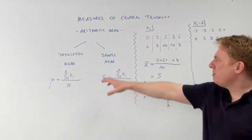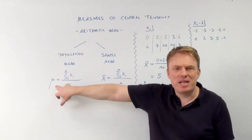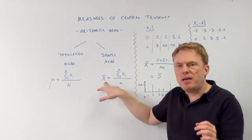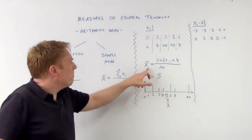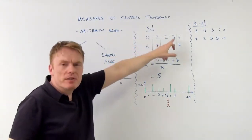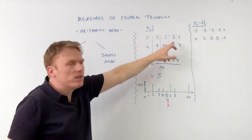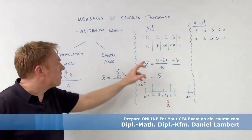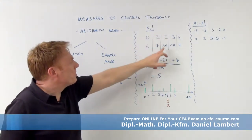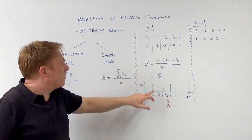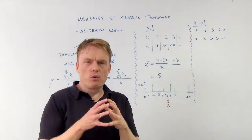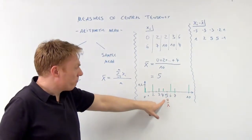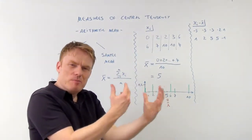If it's the population mean, we call it mu — a Greek letter. So x-bar refers to a sample. This sample mean is calculated by taking the values — 0 plus 2 plus 2, etc. — and dividing by the number of values included in the sample. All in all it's a sum of 50 divided by 10, which gives us 5. So the measure of central tendency gives us 5.